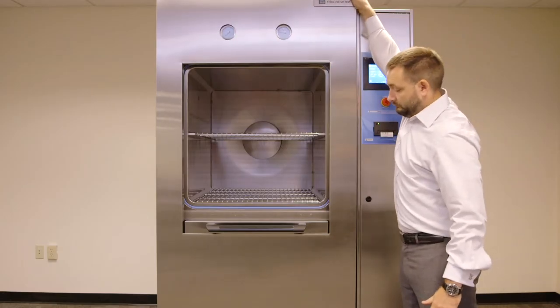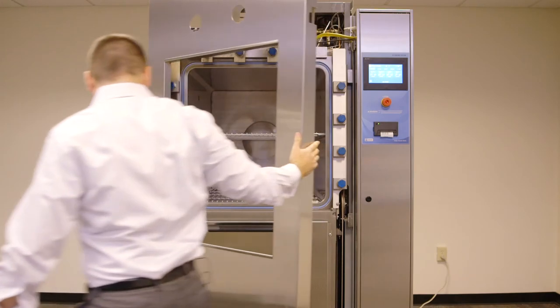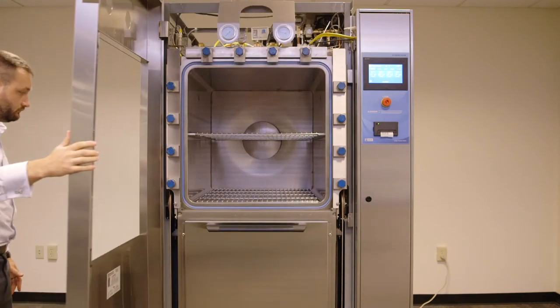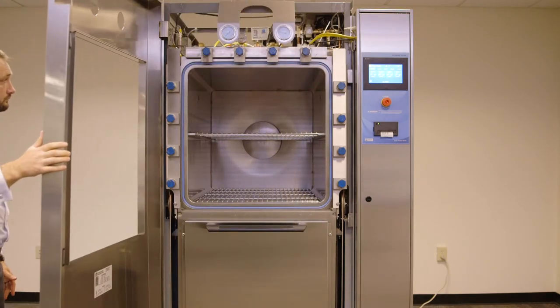The vertical sliding door autoclave's hinged front panel makes it easy to access internal components from the front, thereby reducing service space.